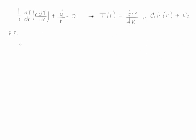The second part of the problem is to determine the boundary conditions and constants for the temperature distribution. The first boundary condition states that the outer surface is insulated, set up as dT/dr evaluated at r equal to R2 equals zero. This also indicates that for a practical application, the temperature at the outside is a maximum. Therefore, we can say that T at r equal to R2 is equal to Ts2, as given in the problem.